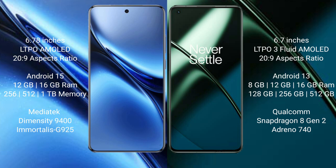Vivo X200 Pro comes with 12GB or 16GB RAM and 256GB, 512GB, or 1TB internal storage, MediaTek Dimensity 9400 processor and GPU Adreno 925. OnePlus 11 comes with 8GB, 12GB, or 16GB RAM and 128GB, 256GB, or 512GB internal storage, Qualcomm Snapdragon 8 Gen 2 processor and Adreno 740 GPU.